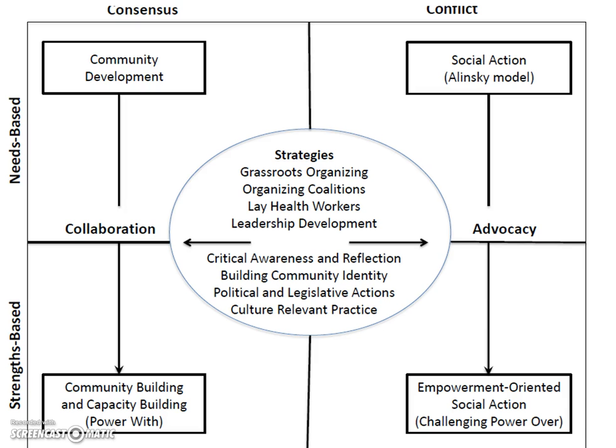This model of community building and capacity shows how you have strength-based approaches and need-based approaches, and those that are in consensus versus those that are conflicting, and how they all interlock. You do this through grassroots organization, organizing through coalitions — which are groups of people that come together — lay health workers (which is what a CHW is), leadership development, critical awareness and reflection, building community identity, political and legislative actions, and cultures relevant to practice. This is how you make change occur.